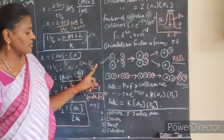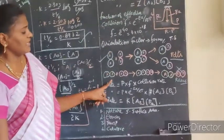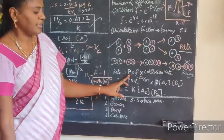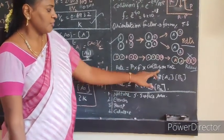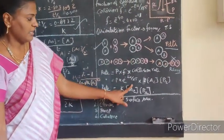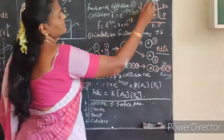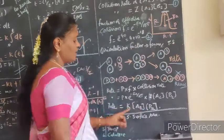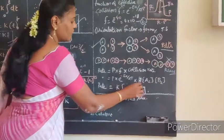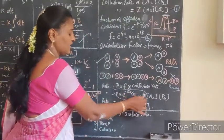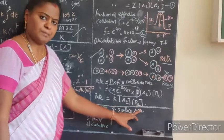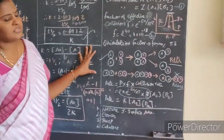The rate now depends on all three factors: the steric factor, the effective collision factor, and the collision rate. The rate equals P (steric factor) times F (e^(-Ea/RT)) times collision rate Z. Substituting the formulas: rate equals K into [A₂] into [B₂]. All the other factors - P, Z, and e^(-Ea/RT) - are considered as K. So rate equals K[A₂][B₂]. This is the condition put forward by Max Trautz and William Lewis.